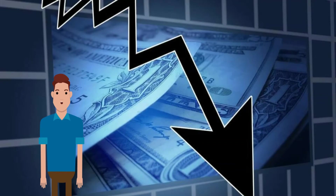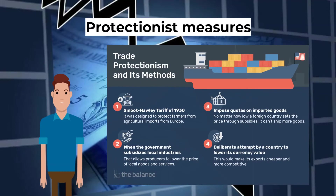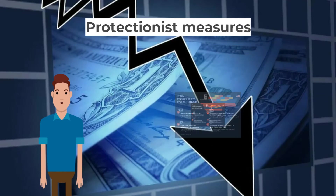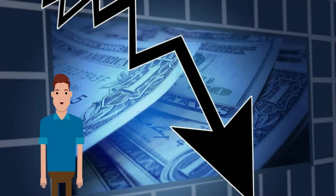Governments can also devalue the exchange rate to improve export competitiveness and demand. Protectionist measures reduce the competitiveness of imports, making domestic consumption more attractive — for example, tariffs raise the price of imports while quotas limit the amount of imports in the economy.